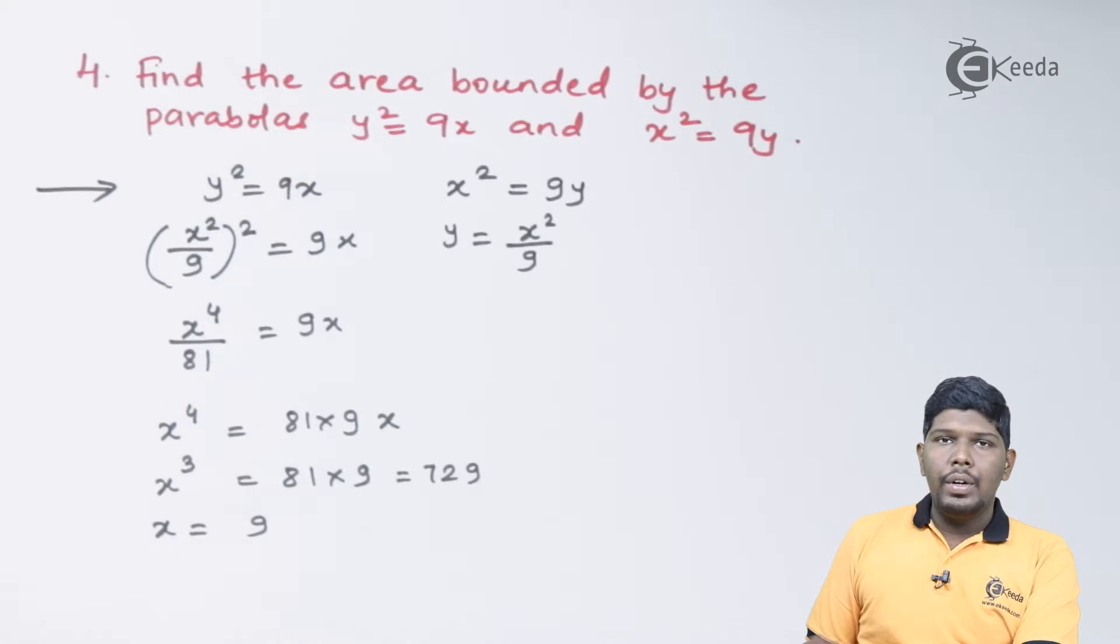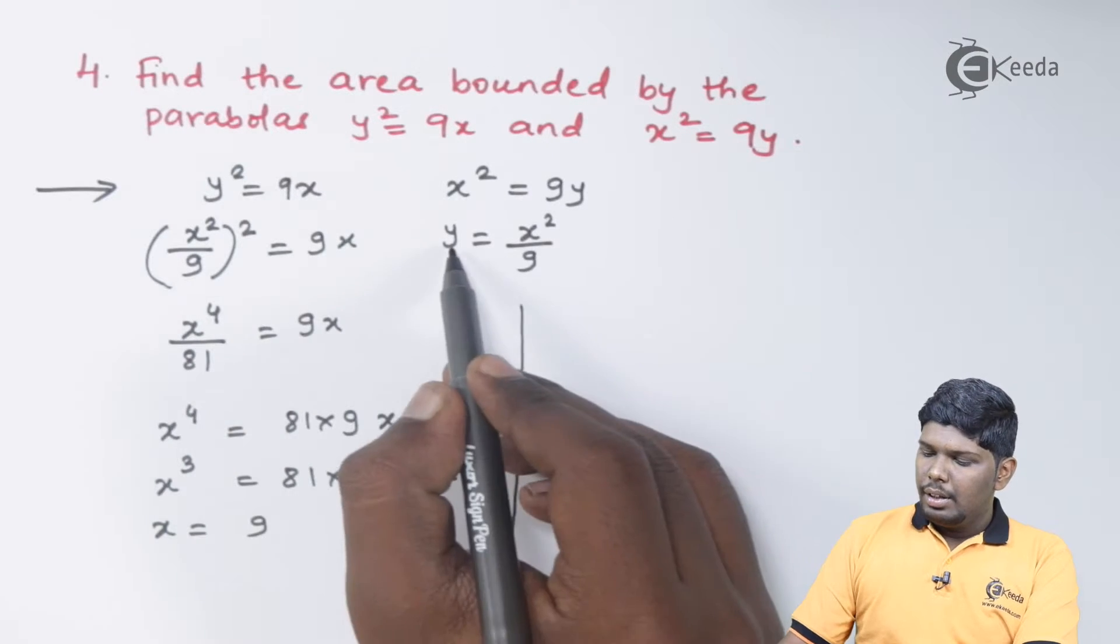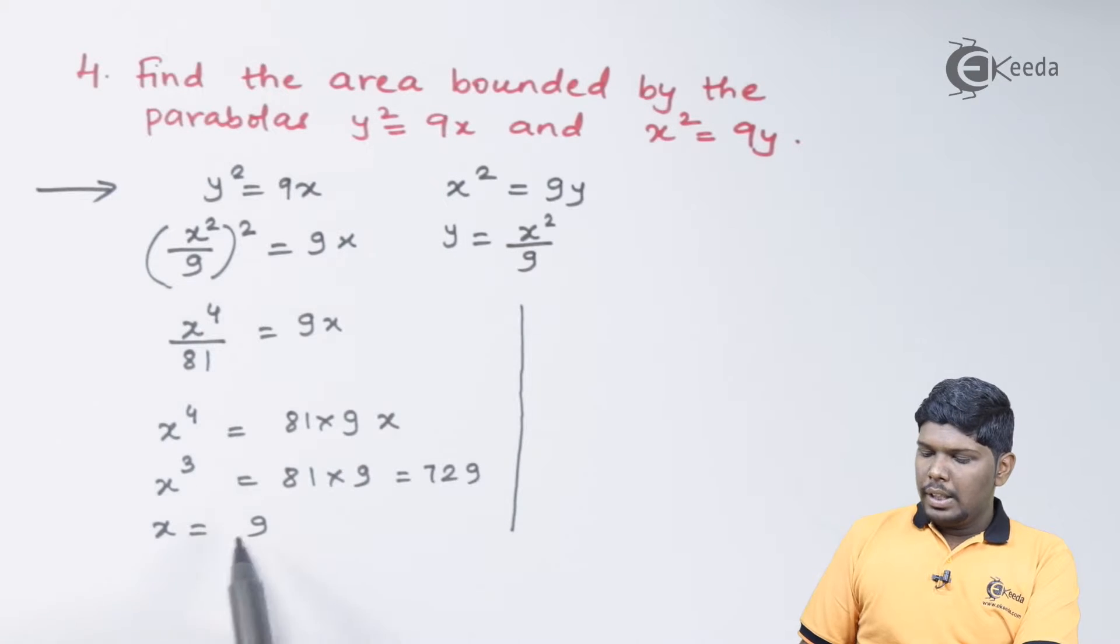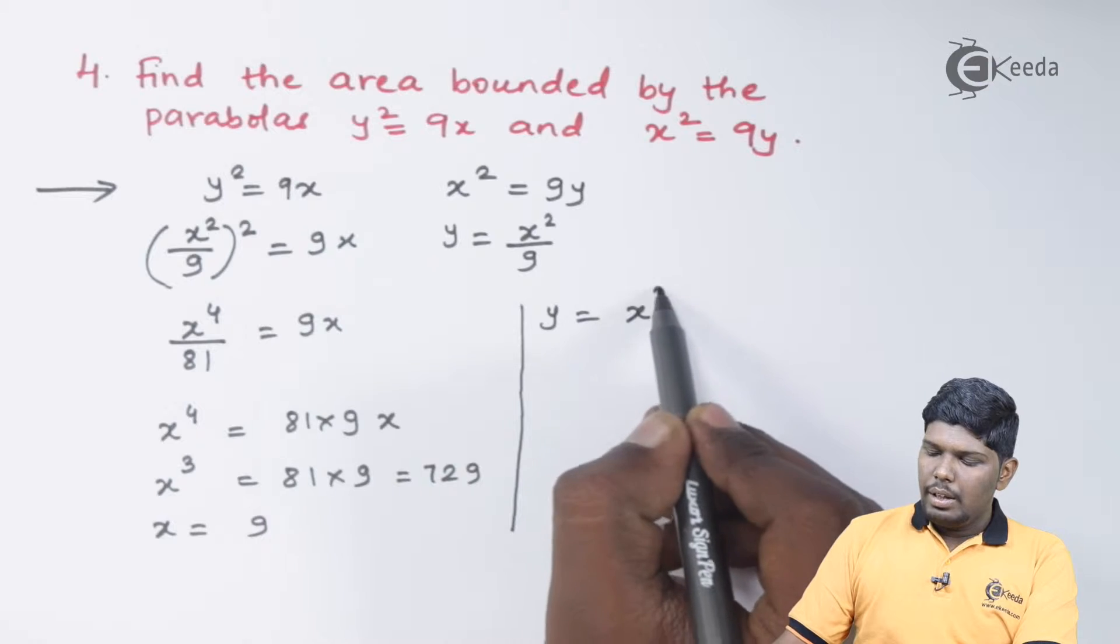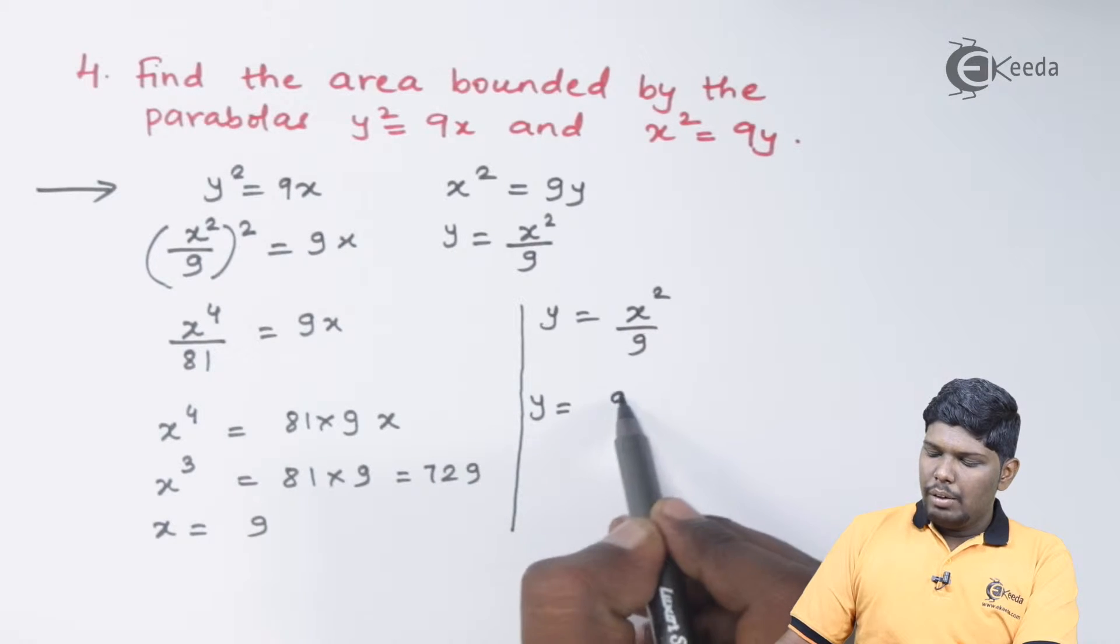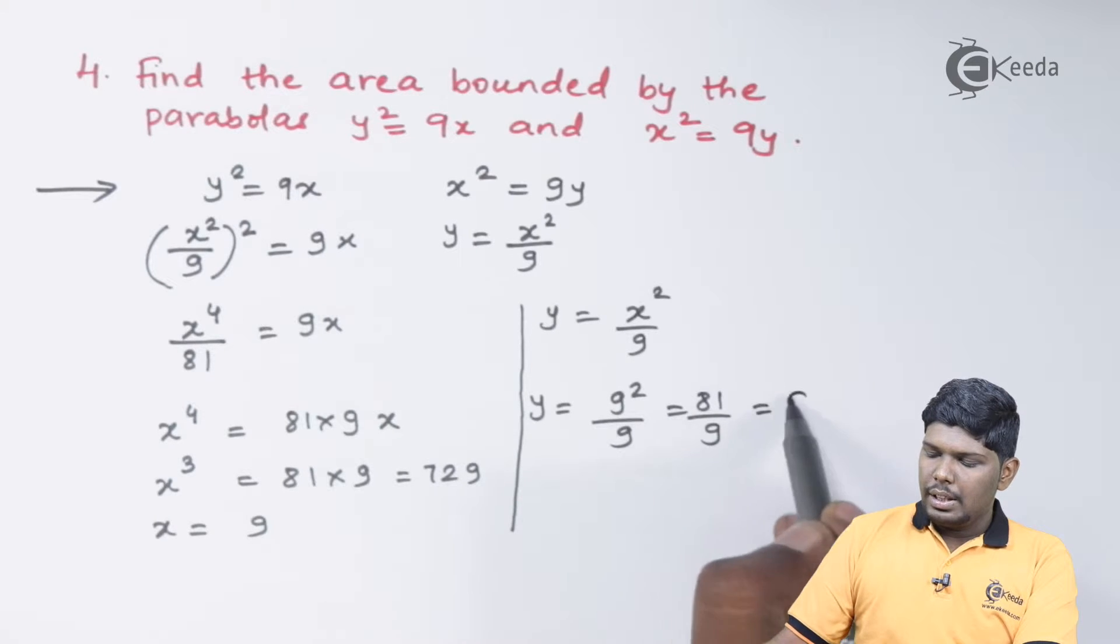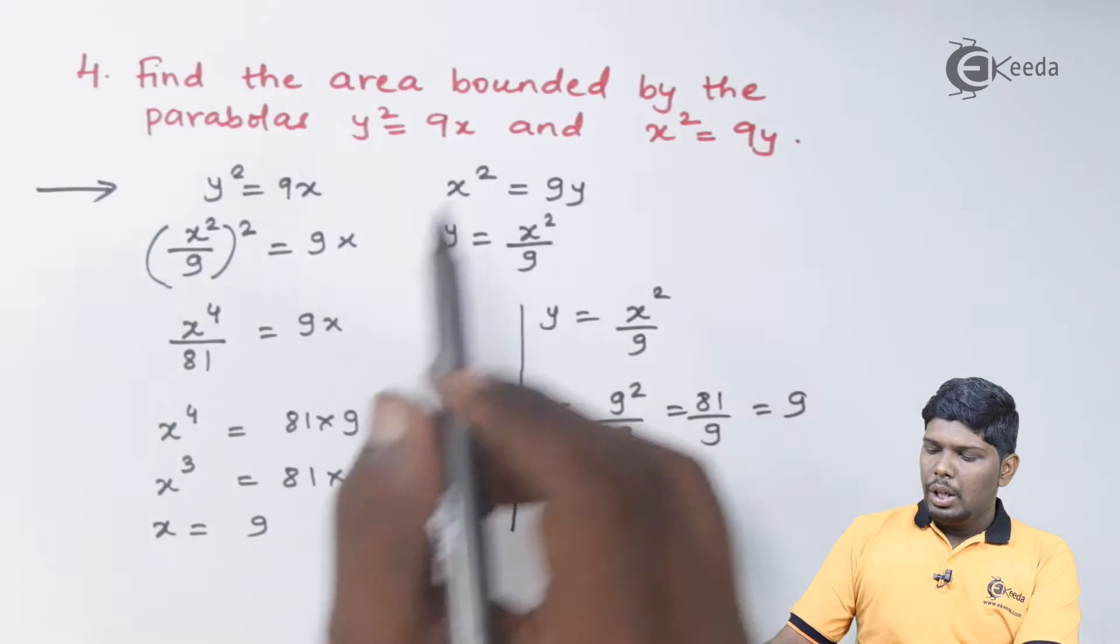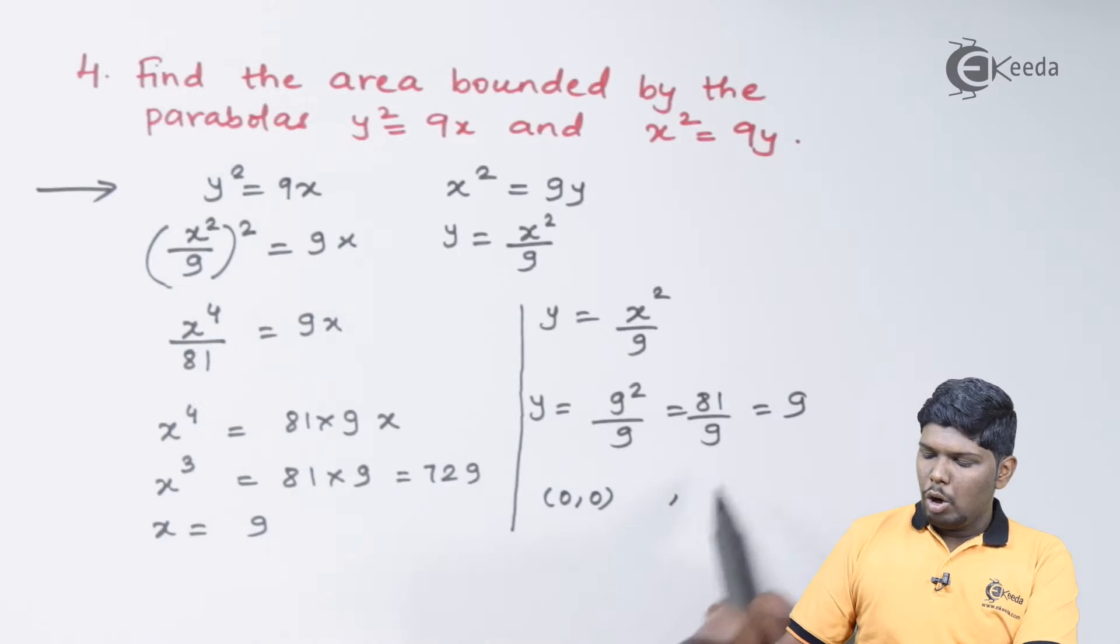So the first point of intersection will be 9, and also you can consider 0 also as both the parabolas will be passing through the point 0 comma 0. Now let us find the corresponding value of y. So we can substitute the value of x is 9 in this equation. y is x square upon 9. So this will give you 9 square upon 9, that is 81 upon 9, which is 9 only. Therefore, both the parabolas are intersecting at the point 0 comma 0 as well as 9 comma 9.